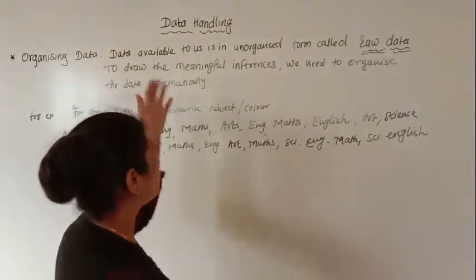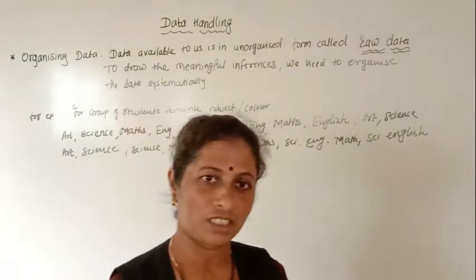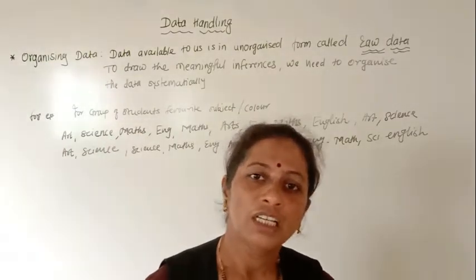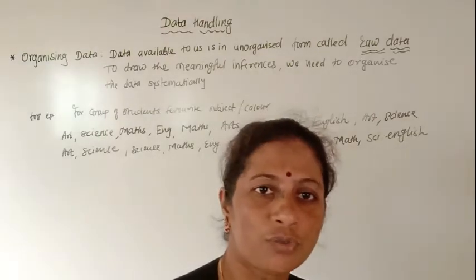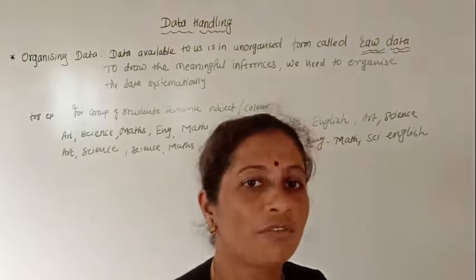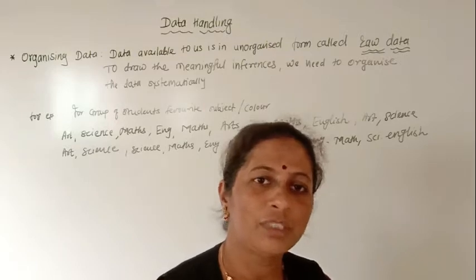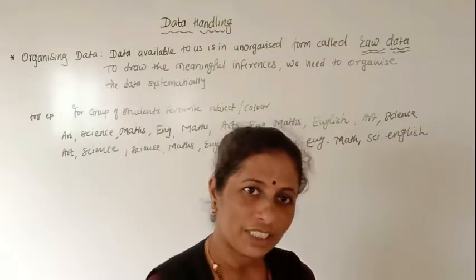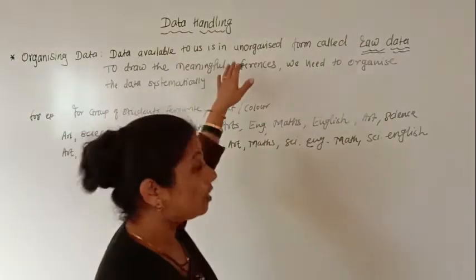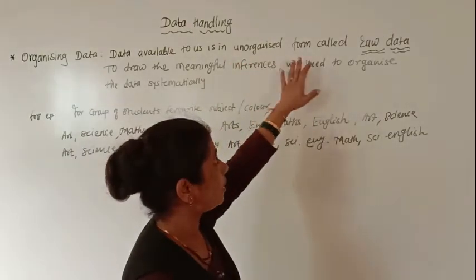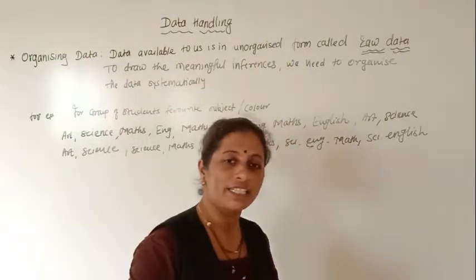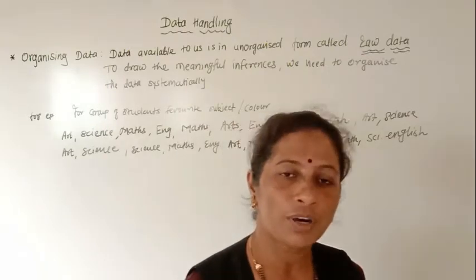So what is meant by organizing data? The usual data available to us in an unorganized form is called raw data. For example, if you want to take information about the favorite subject of students or favorite colors of students — when you collect that information, it is unorganized data, called raw data. To draw meaningful inferences, we need to organize the data systematically so that we get the proper information.